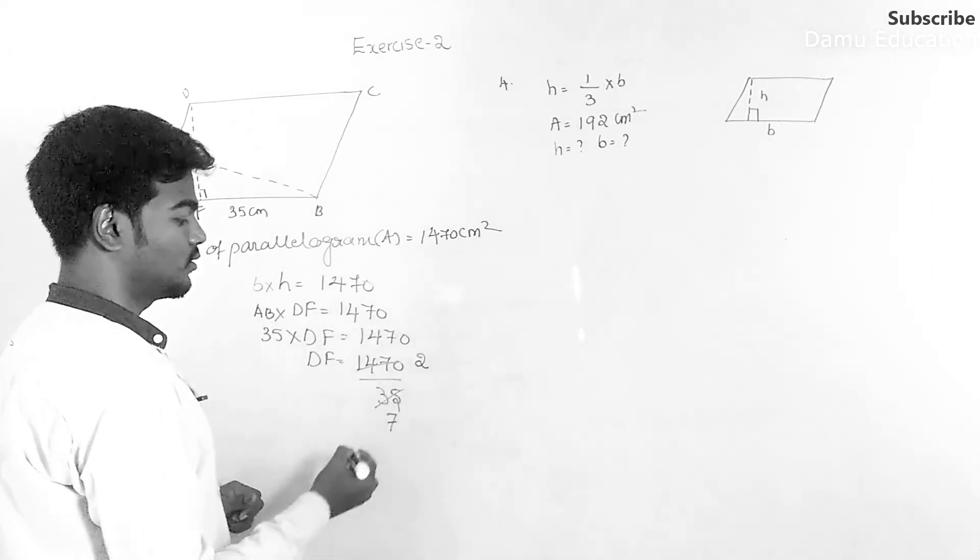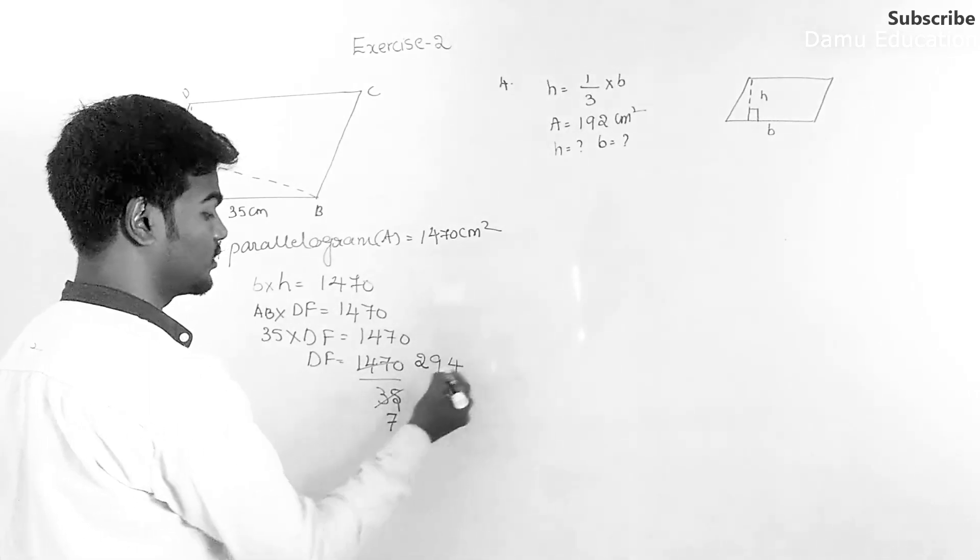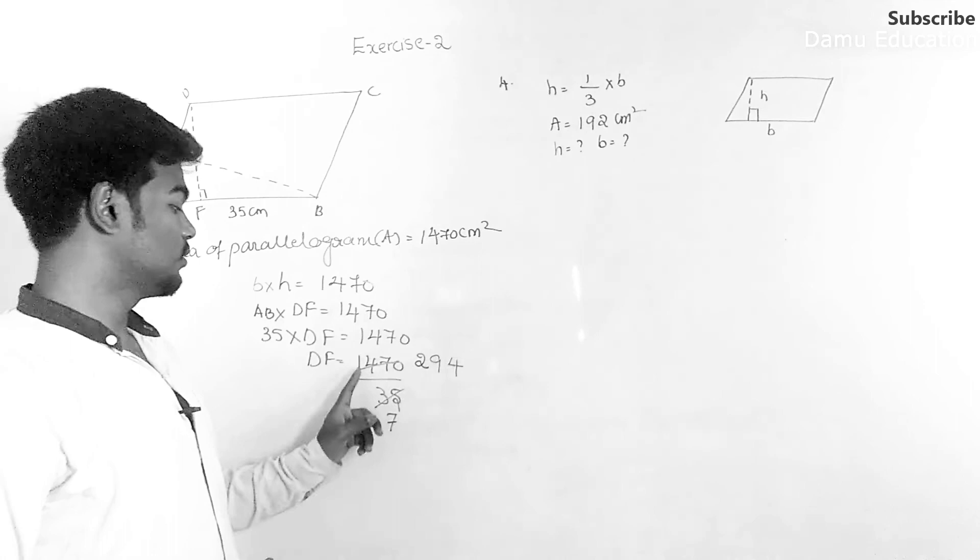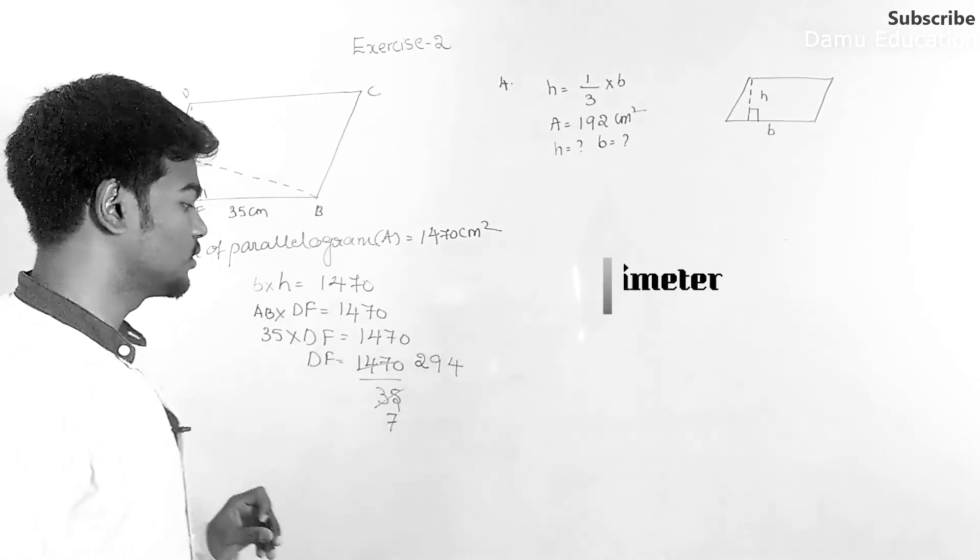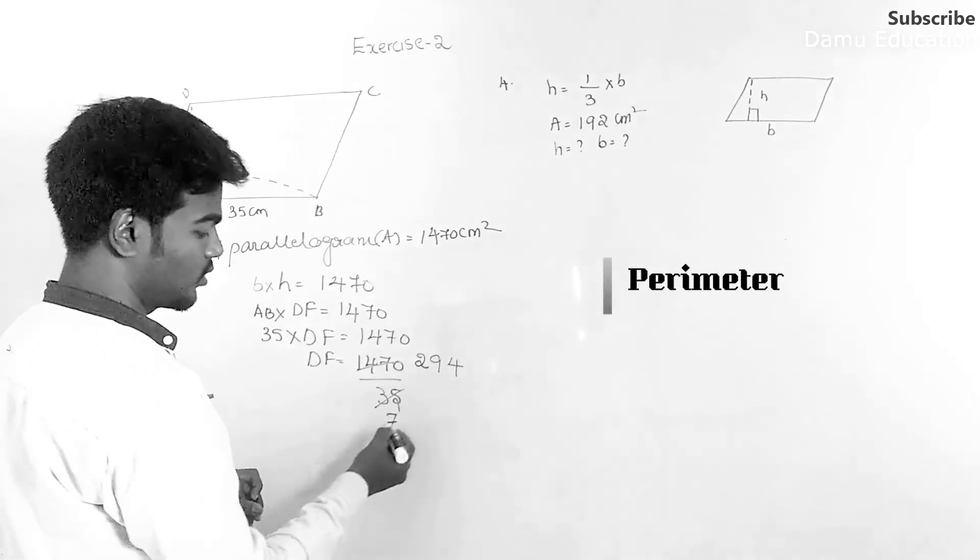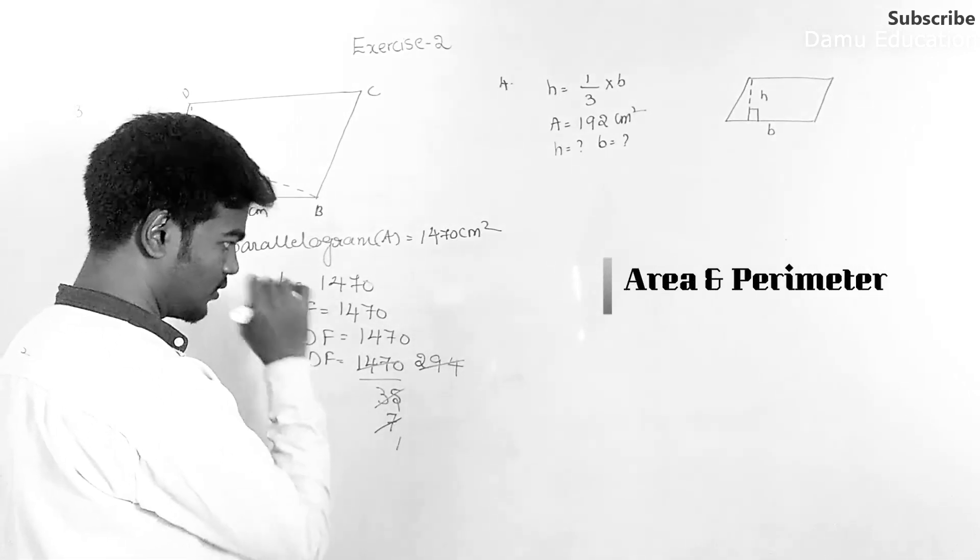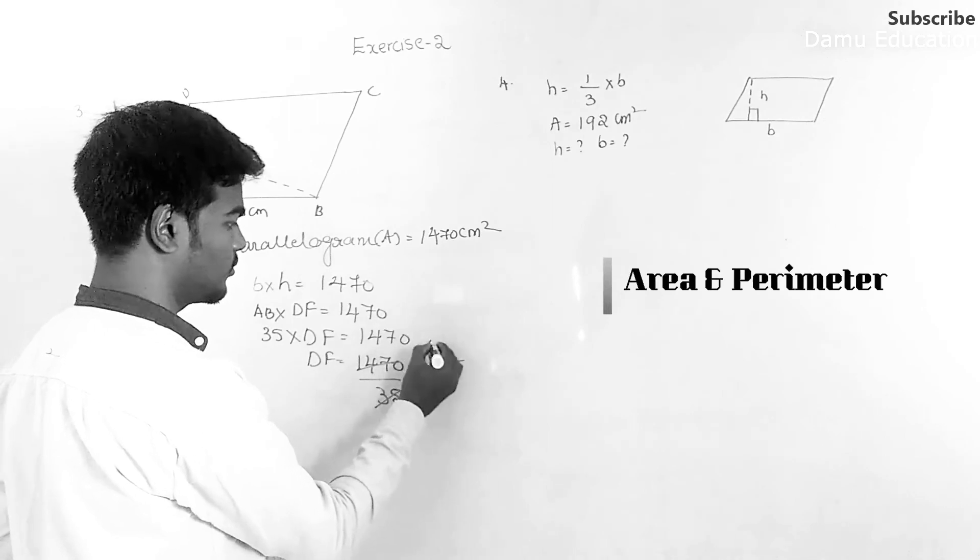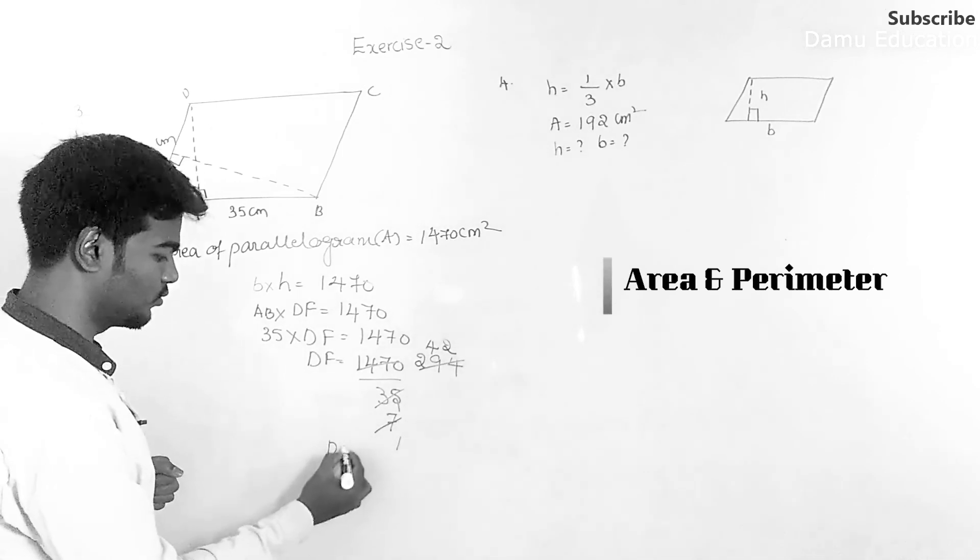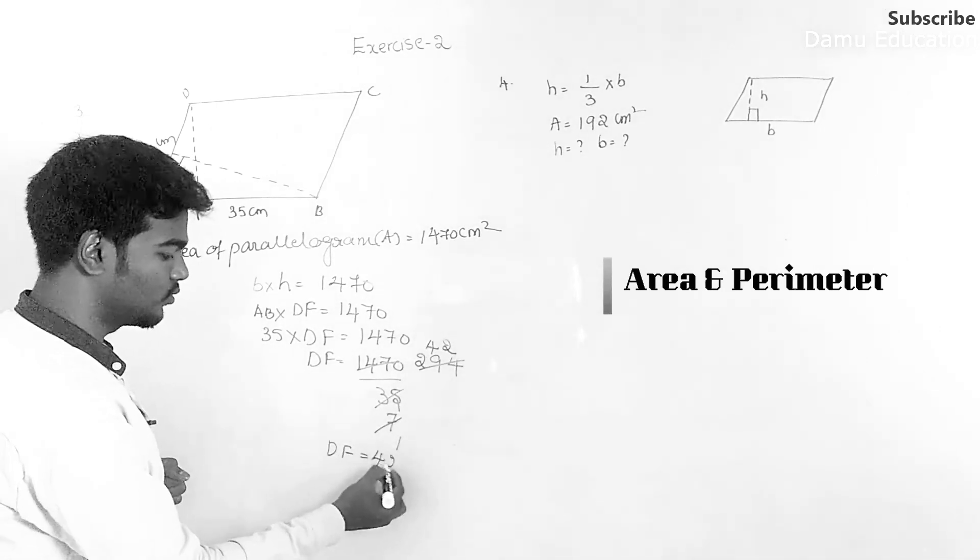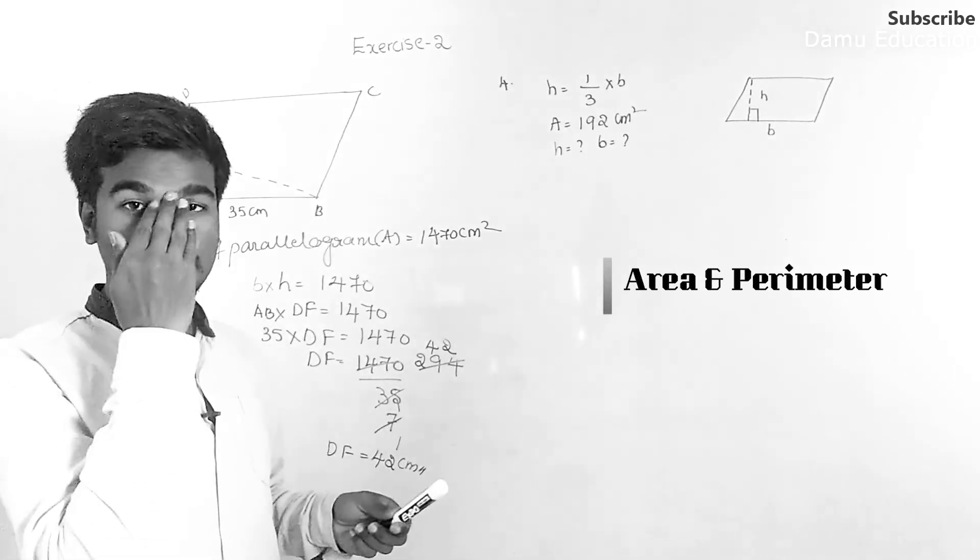Then 5 into 9, then 2, 5 into 4. So then you can do with 7: 7 into 1, then 14, 42. Then DF will be equal to 42 centimeters. So here 7 into 1, 7 into 2, 7 into 4 is 28.